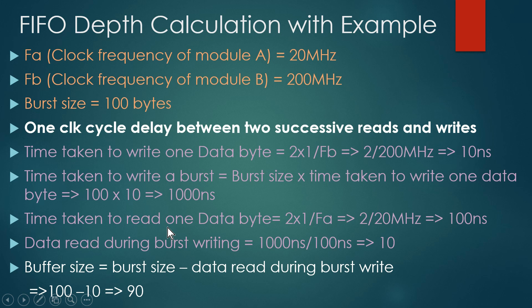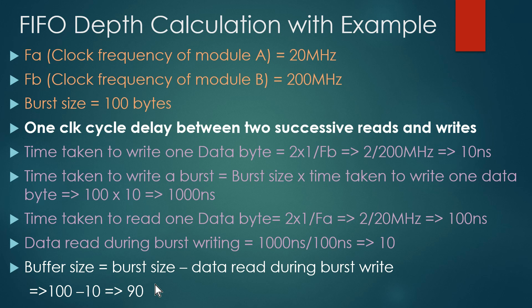In the fourth step, we calculate data read during burst writing. We know the complete burst is written in 1000 nanoseconds, and reading one data byte takes 100 nanoseconds. So 1000 ÷ 100 = 10 bytes are read during burst writing. The buffer size equals burst size minus data read during the burst write: 100 − 10 = 90. When burst writing is over, 90 data bytes still need to be stored, so we need a buffer of 90 bytes.